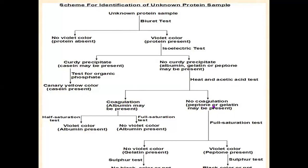Coagulation in the heat and acetic acid test indicates that albumin may be present. No coagulation indicates peptone or gelatin may be present. If you are getting coagulation, albumin may be present — to confirm it, you do the half saturation test and full saturation test. In the half saturation test you will get violet color — albumin is present and confirmed. In the full saturation test, no violet color — that also indicates albumin present and confirmed.